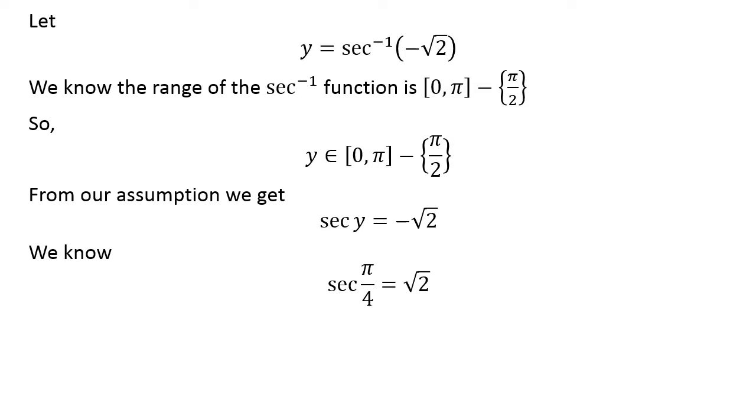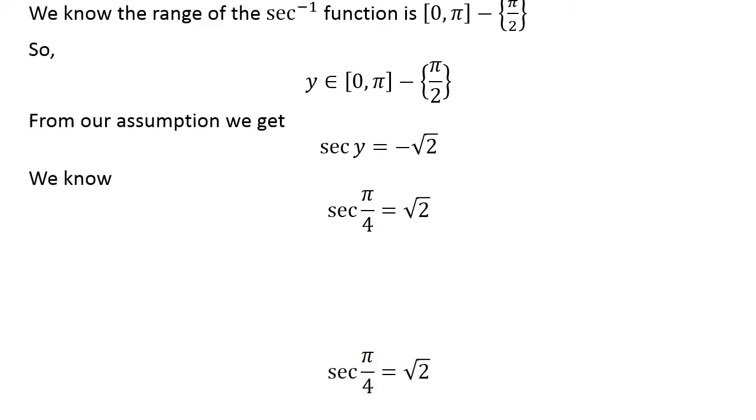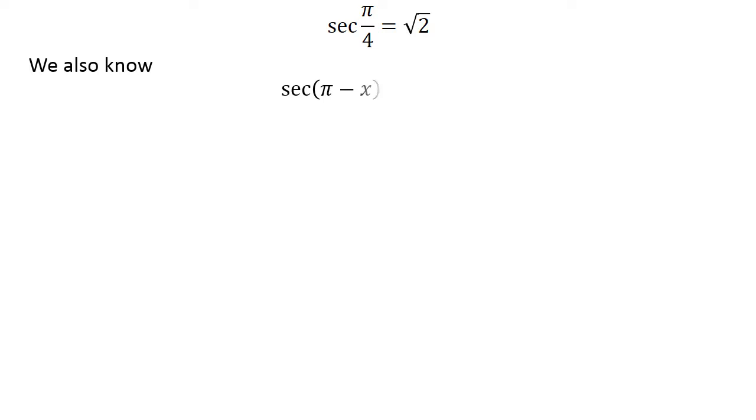We know sec(π/4) = √2. We also know the trigonometric identity sec(π - x) = -sec(x).